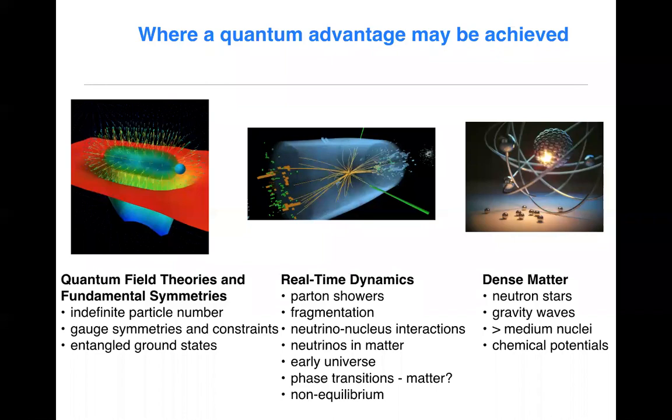In dense matter, one wants to have predictive capabilities on the behavior of dense matter, neutron matter, including the production of gravitational waves in these astrophysical events. One wants to be able to perform computations in large nuclei. At the moment, we're somewhat limited classically because of the dimensionality of the Hilbert space that's accessible classically, and also systems with a selection of chemical potentials.